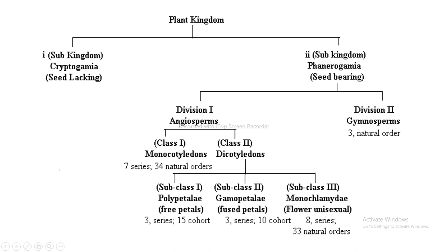Class 2 Dicotyledons are further divided into subclasses. Subclass 1 is called Polypetalae, meaning free petals, and it includes about three series and 15 cohorts. Subclass 2 is called Gamopetalae, meaning fused petals, and it includes about three series and 10 cohorts. Subclass 3 is called Monochlamydeae, meaning flowers unisexual, and it includes about eight series and 33 natural orders.